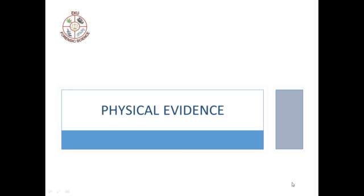Welcome to the final topic of Module 1, Physical Evidence. We will begin by discussing the common types of physical evidence and recalling the various ways in which physical evidence has value in an investigation. We will also define the manner in which physical evidence is created and discuss the differences between class characteristics and individual characteristics. We will then also state and study the requirements of a jury when considering physical evidence.